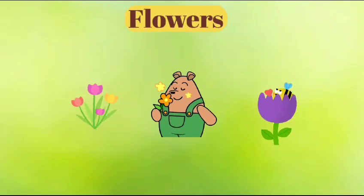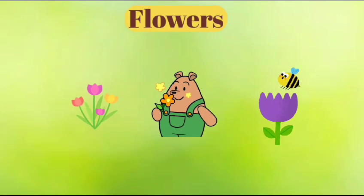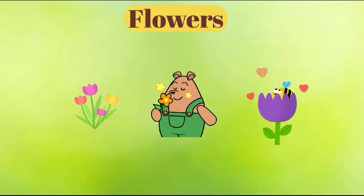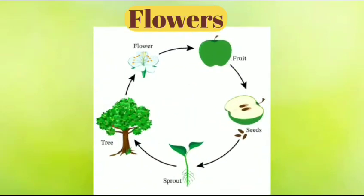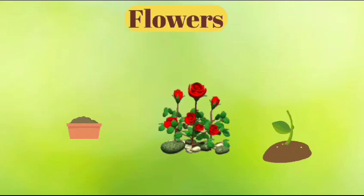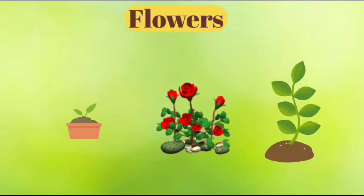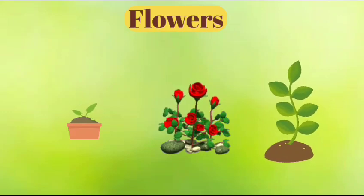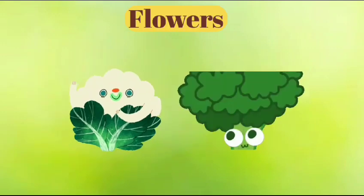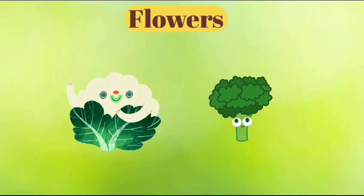Flowers. Most flowers are brightly colored and have a sweet smell. Most flowers change into fruits. Flowers are important to a plant as they help it to reproduce. Cauliflower and broccoli are examples of flowers that we eat.